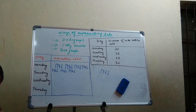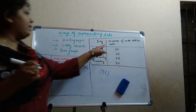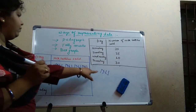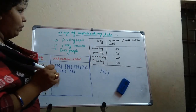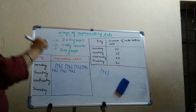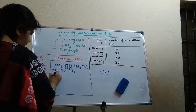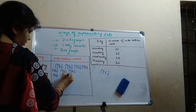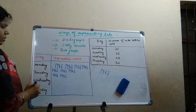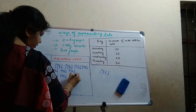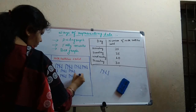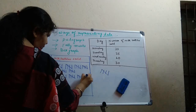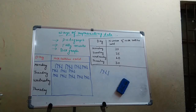Now let us move towards Tuesday. Tuesday we have the number of milk bottles sold is 25. So in groups of 5, we have to make how many? 5. So this is 5 for Tuesday. First group is 5, then second group of 5 — 10, 15, 20, and 25. Tuesday is done.